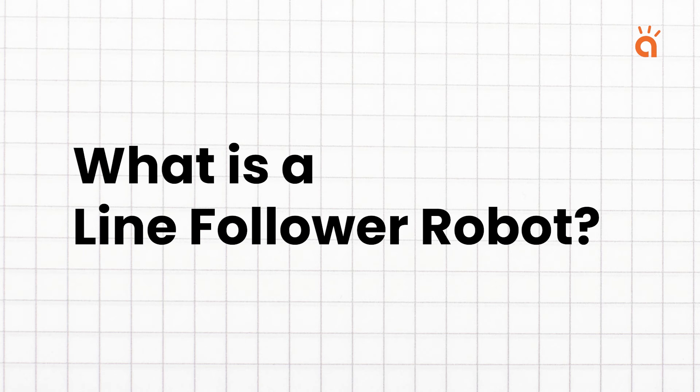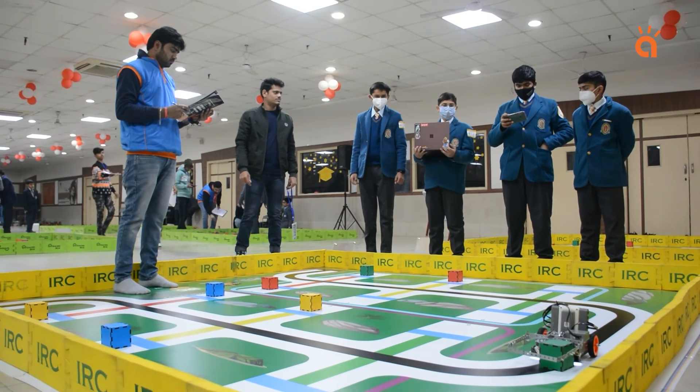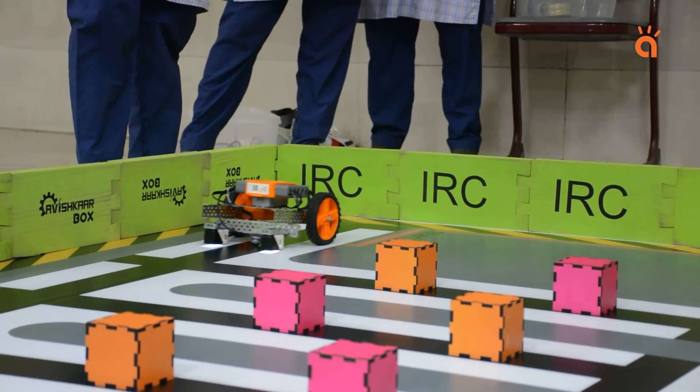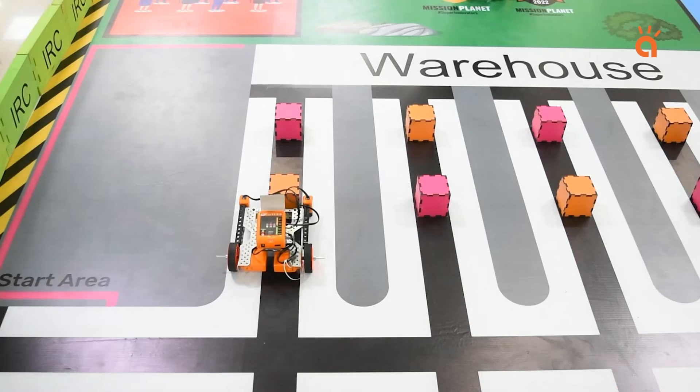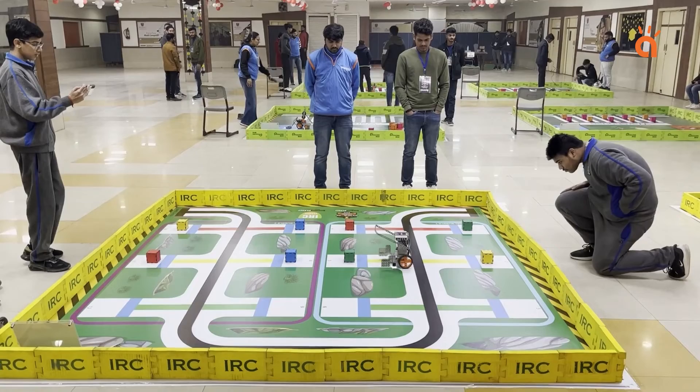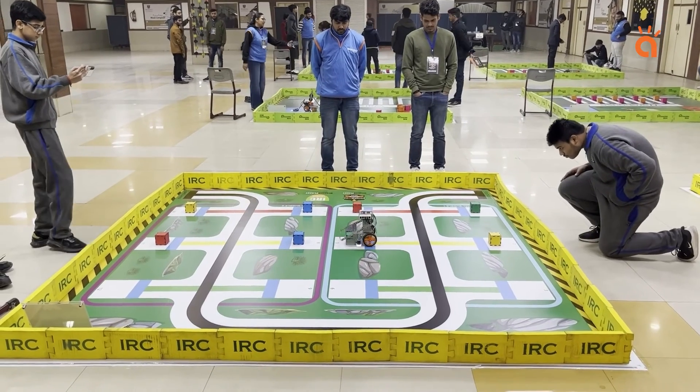What is a line follower robot? A line follower robot is a smart machine designed to follow a track printed on a surface. The robot will perform various actions while following this track.